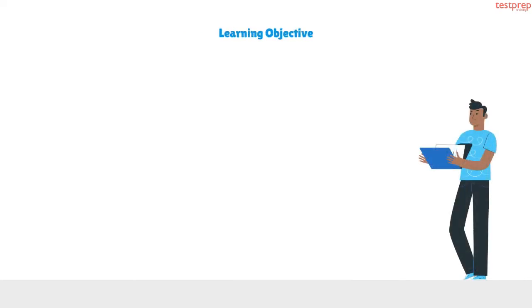Now we will discuss about learning objectives. The objectives are the topics and areas which are very important for the Google Certified Professional Cloud Architect exam, as these objectives are the basis of the exam. The Google Certified Professional Cloud Architect exam covers various areas — these are the abilities and knowledge which the exam wants to test. So, the objectives are mentioned below.